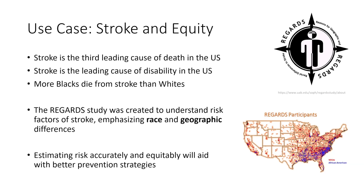Stroke is the third leading cause of death in the U.S. and the leading cause of disability. It is well understood that more Black patients die from stroke than White patients. However, early work in stroke had prioritized Caucasian populations, and the REGARDS study was created specifically to understand risk factors and differences between races and geographic regions. As shown in the bottom right, there is a marked difference in race and geographic location among the study's participants — over 30,000 in total.